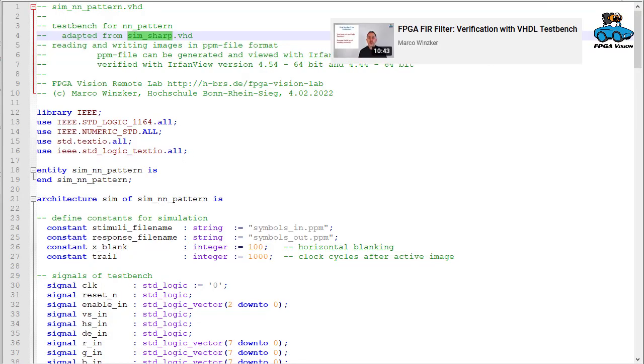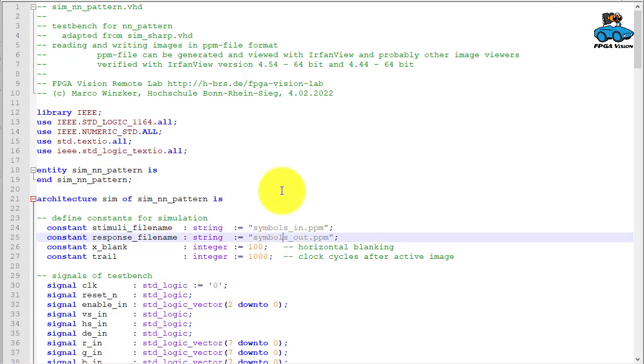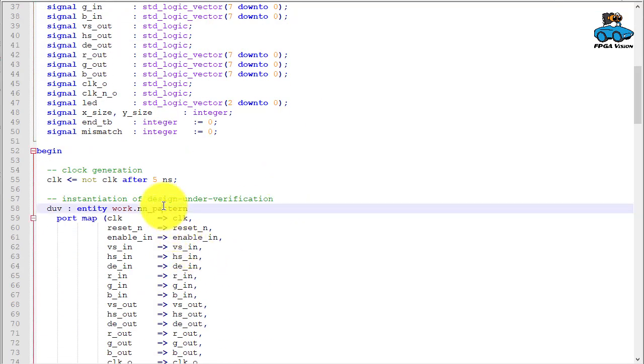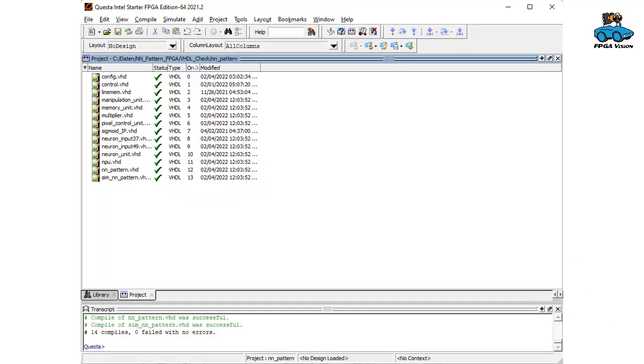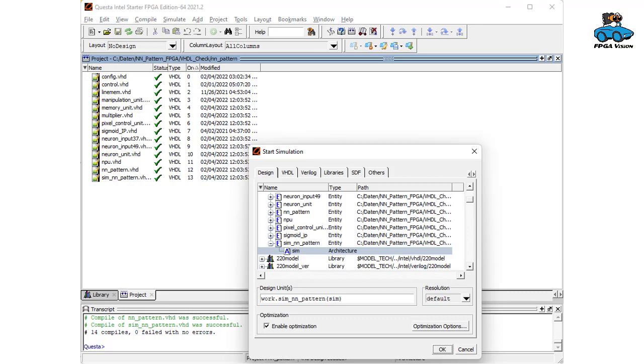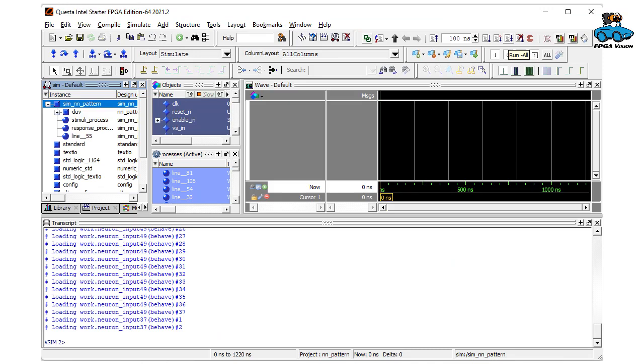And if we now have a PPM input image, we can go to the TestBench. The TestBench is a copy from the design of an FIR filter described in another video. We change the entity name. We change the name of the input and output image. And we change the name of the design and the verification. And then we can use that TestBench. For simulation we use the ModelSim simulator in the Questa Intel Starter Edition. And we compile all the required VHDL files. Then we invoke the architecture Sim of SimNNPattern and we start the simulation.